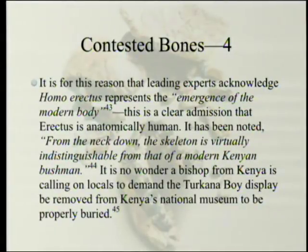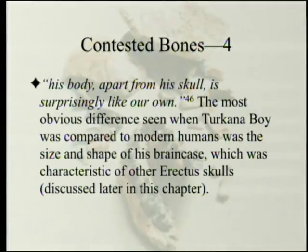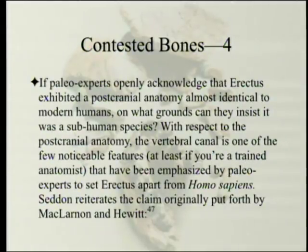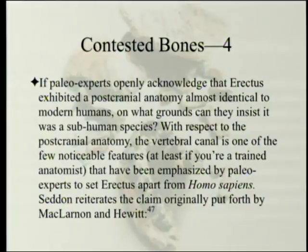It has been noted that from the neck down the skeleton is virtually indistinguishable from that of a modern Kenyan bushman. It is no wonder a bishop from Kenya is calling on locals to demand the Turkana Boy display be removed from Kenya's National Museum to be properly buried. His body, apart from his skull, is surprisingly like our own. The most obvious difference was the size and shape of his brain case, characteristic of other erectus skulls. If paleo experts openly acknowledge that erectus exhibit a postcranial anatomy almost identical to modern humans, on what grounds can they insist it was a subhuman species?